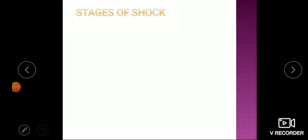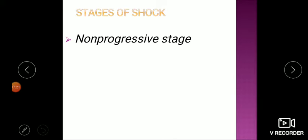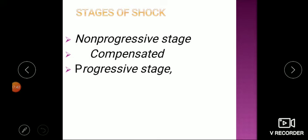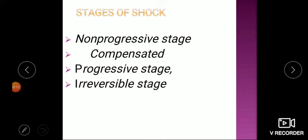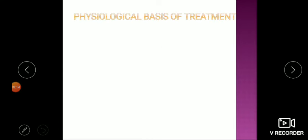To summarize the three stages: the first is the non-progressive stage, where compensatory mechanisms activate and the body tries to restore itself — with less severe blood loss the patient may recover without external support. The second is the progressive stage, requiring fast medical treatment. If treatment is given in time the patient can return to normal. If not, the patient enters the irreversible stage — these are the three stages of circulatory shock.